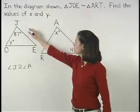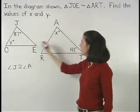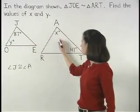And if angle J is congruent to angle A, then 87 equals X.